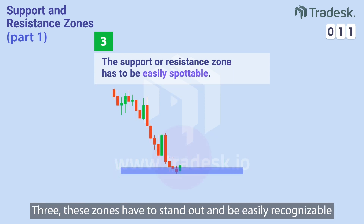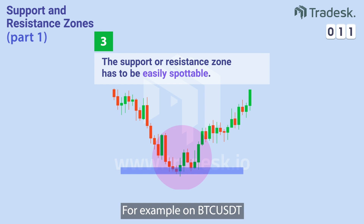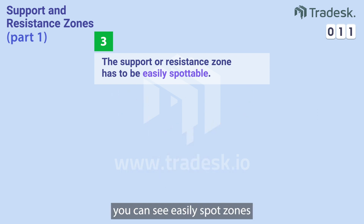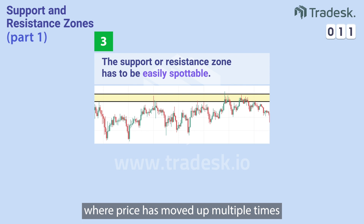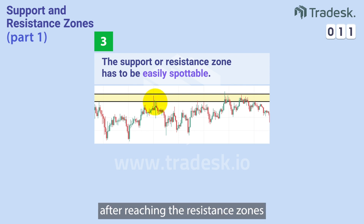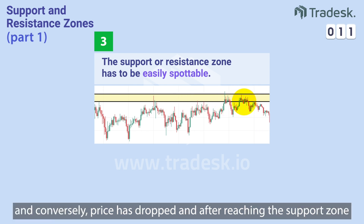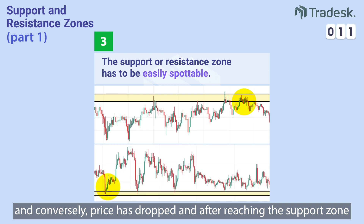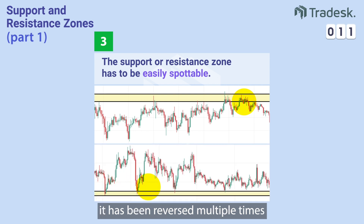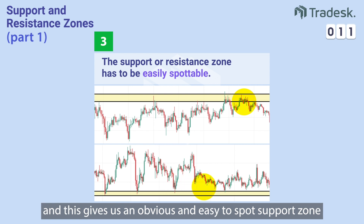3. These zones have to stand out and be easily recognizable. For example, on BTCUSDT, we can easily spot zones where price has moved up multiple times and has been rejected and reversed after reaching the Resistance Zones. 4. This makes the zone obvious and easy to recognize. Conversely, price has dropped and after reaching the Support Zone, it has been reversed multiple times, giving us an obvious and easy to spot Support Zone.